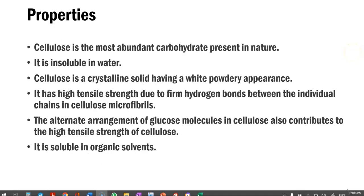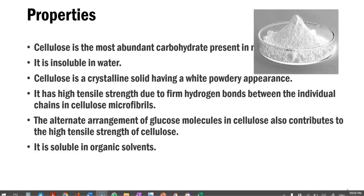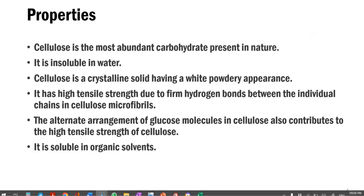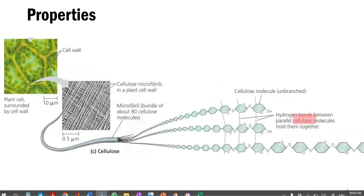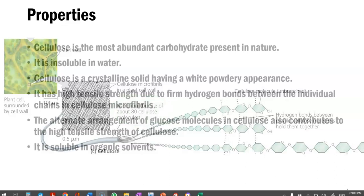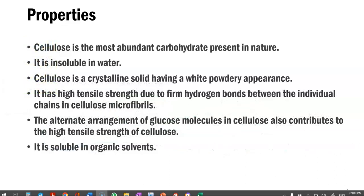Now we look at the properties of the cellulose molecule. Cellulose is the most abundant carbohydrate present in nature. It is insoluble in water and crystalline when present in solid form, having a white powdery appearance. It has high tensile strength, mainly due to the firm hydrogen bonds formed between the individual chains of the cellulose microfibrils. The alternate arrangement of the glucose molecules in cellulose also contributes to its high tensile strength. It is soluble in organic solvents.